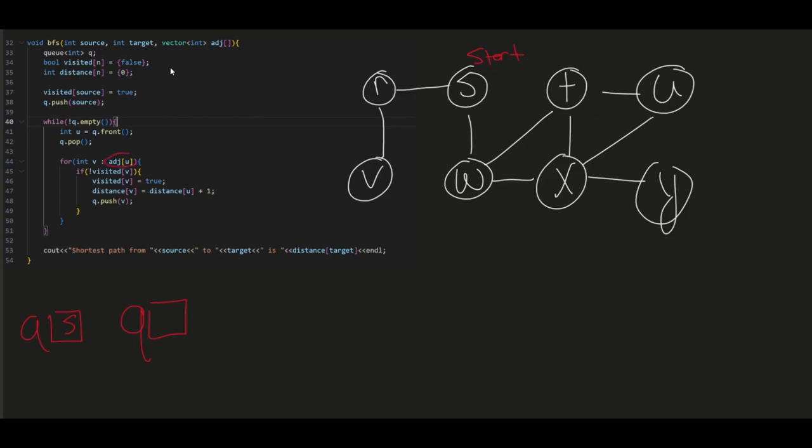Since U is the front right here, it's basically S. So we're going to add all the neighbors of S into this queue which is W and R. As you can see here, neighbors of S is W and R. Now the distance from W and R is one. So we're going to add that distance. That's our two arrays.